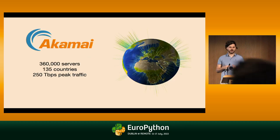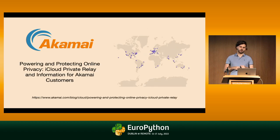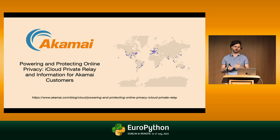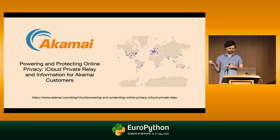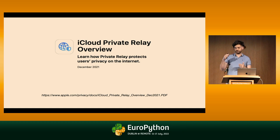HTTP/3 is important to Akamai because we run one of the largest CDNs with over 300,000 servers. But today I won't talk about a CDN. I will talk about proxies. Last year, in 2021, Akamai built a brand new network of proxies. My job was to write a client that would connect and test these proxies. If you are wondering how such proxies could be useful, you can look to your iPhone or Mac and search for iCloud Private Relay.